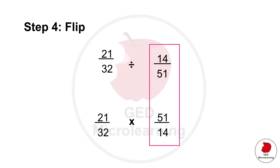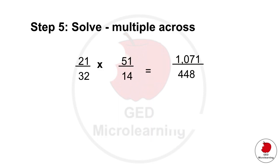We're going to change the division sign for multiplication and then we're going to flip the second fraction from 14 divided by 51 to 51 divided by 14.